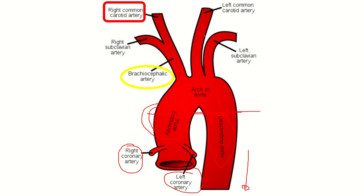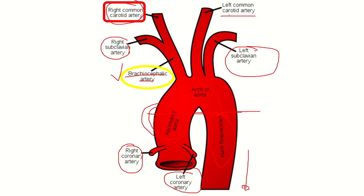From the arch of the aorta, three important branches arise: the brachiocephalic artery, the left common carotid artery, and the left subclavian artery. Our focusing point is the brachiocephalic artery. It arises from the arch of the aorta and terminates into two branches: the right subclavian artery and the right common carotid artery.